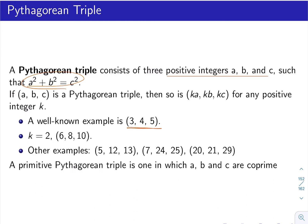Another fact is that if a, b, c is a triple — in other words, a squared plus b squared equals c squared — then if you multiply them by the same constant k, where k is another positive integer, then ka, kb, kc also satisfies the equation and forms a Pythagorean triple.